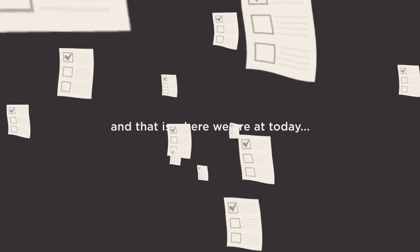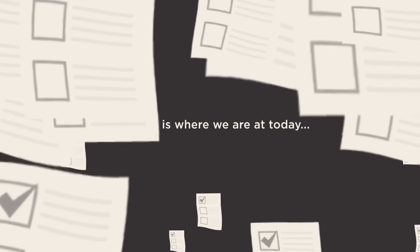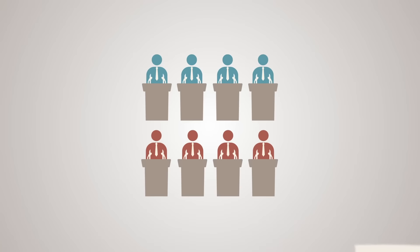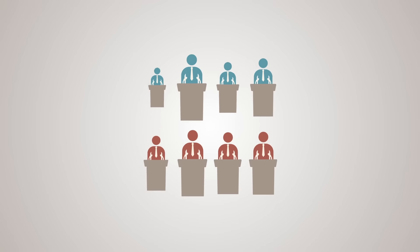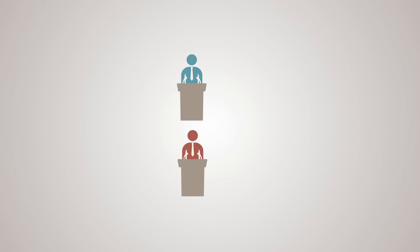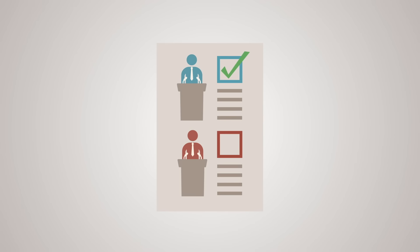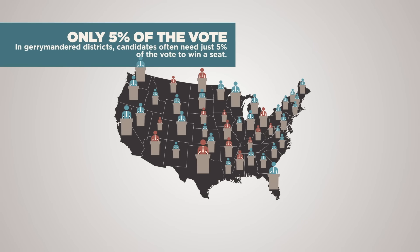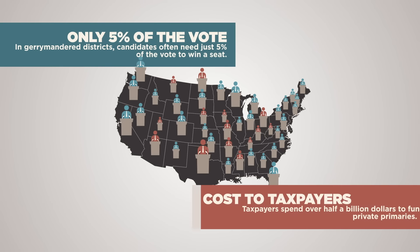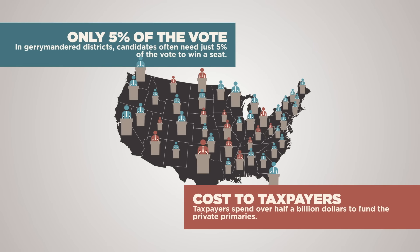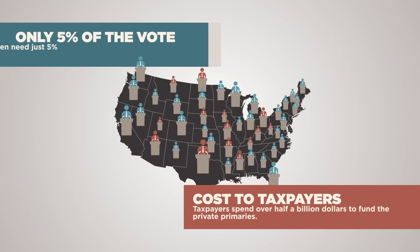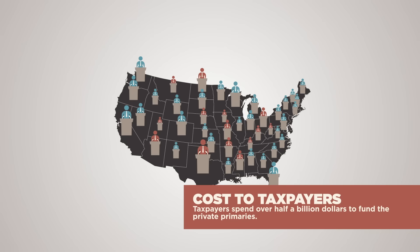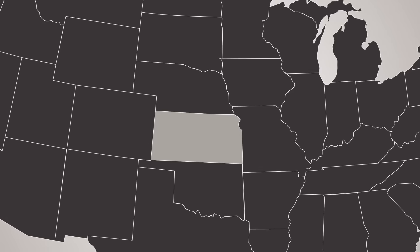Either join a political party or you can't vote at all in most states. And that is where we are today. Primary elections serve the purpose of electing someone to represent the party on the general election ballot. And over the years, both parties have worked together to manipulate the rules to make it impossible for anyone who doesn't first win a party primary to have a chance in the general election.